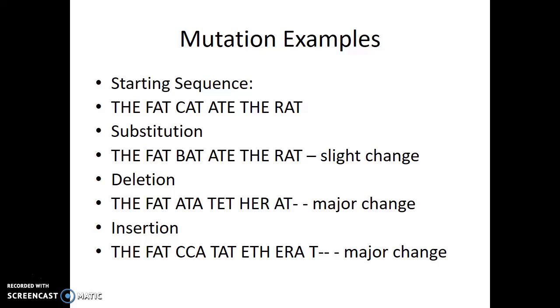Now a substitution mutation would be if one letter was changed for another. Let's imagine that C in cat is instead changed to B. Now we have the fat bat ate the rat. There's a slight change, but the sentence is still there. Most of the meaning is still there, we just have a slightly different subject now.